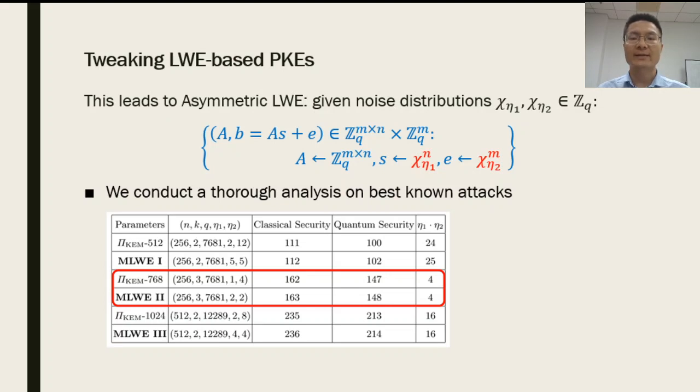We conduct a subtle analysis on best known attacks. The experiments show that the security remains unchanged if we keep the product of eta1 and eta2 unchanged. For example, for the standard LWE with eta1 equal to eta2 equal to 2, the product of eta1 and eta2 is 4. For roughly the same security, we can also set eta1 to be 1 and eta2 to be 4, such that the product of eta1 and eta2 is still 4. This basically gives us many choices of eta1 and eta2 for making better trade-off between efficiency and security.